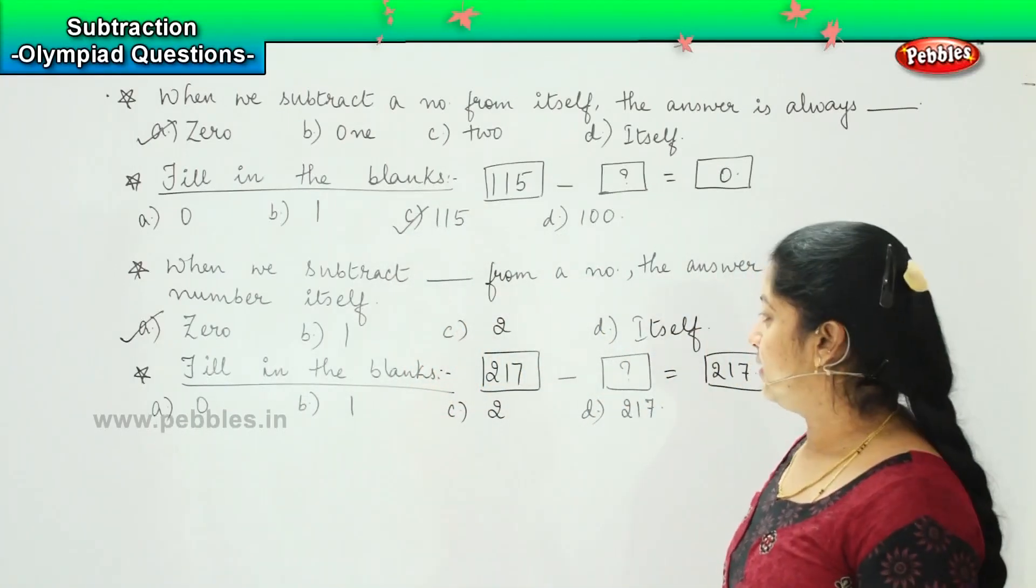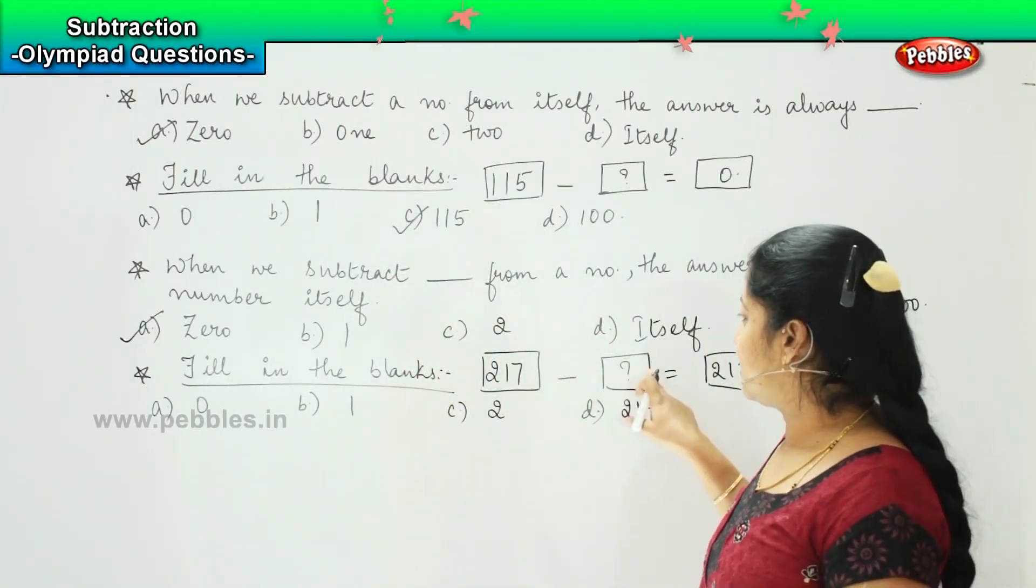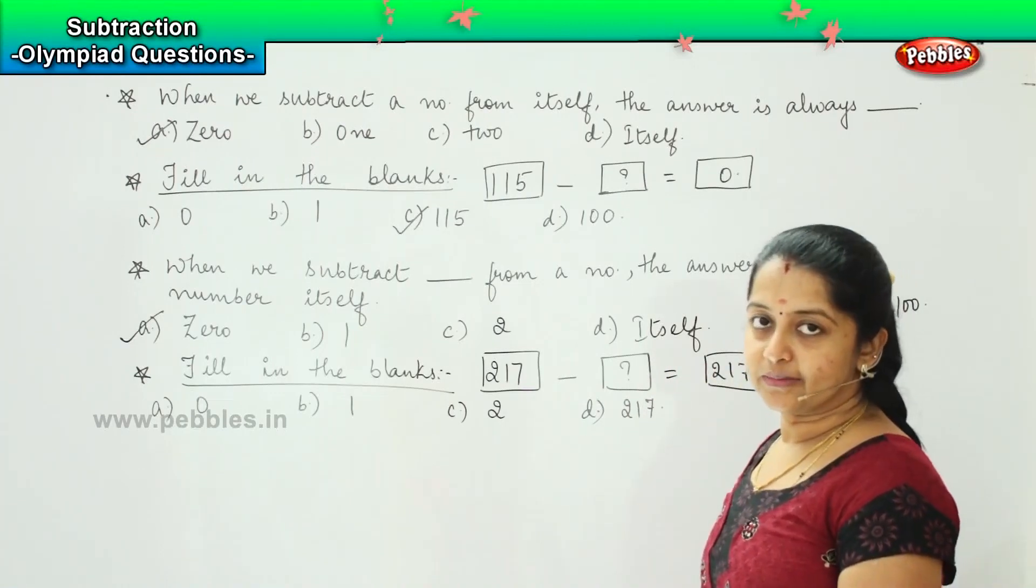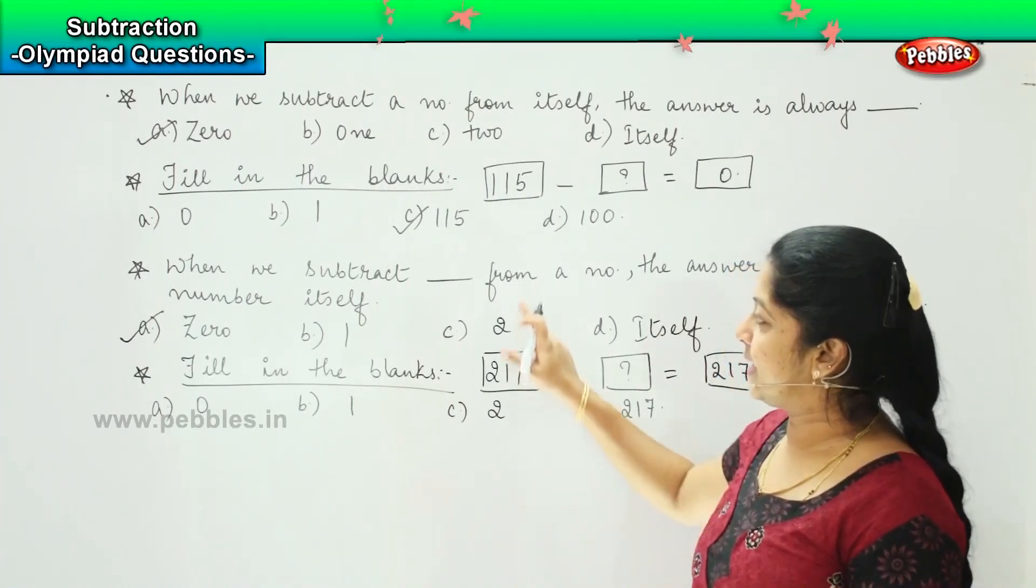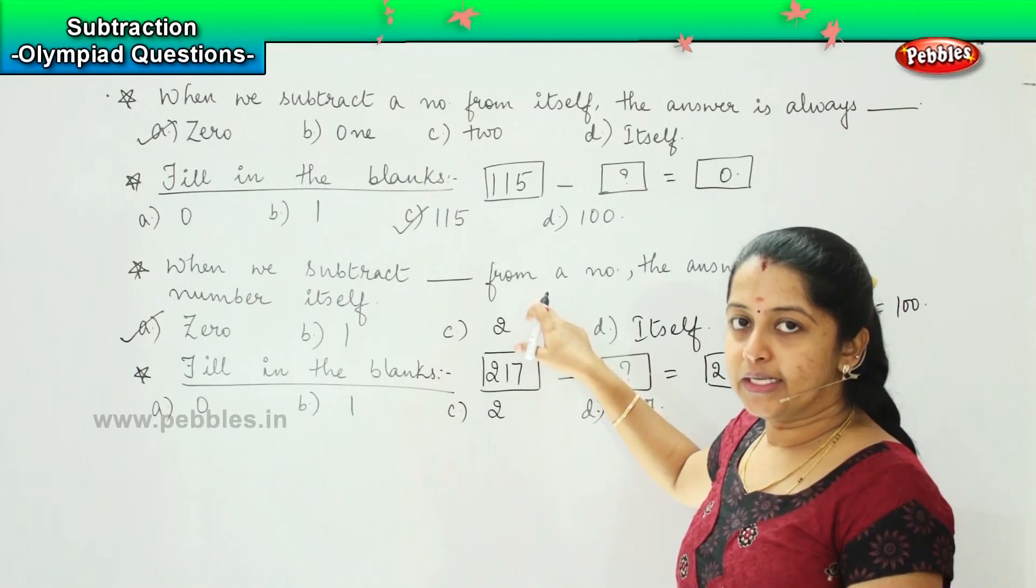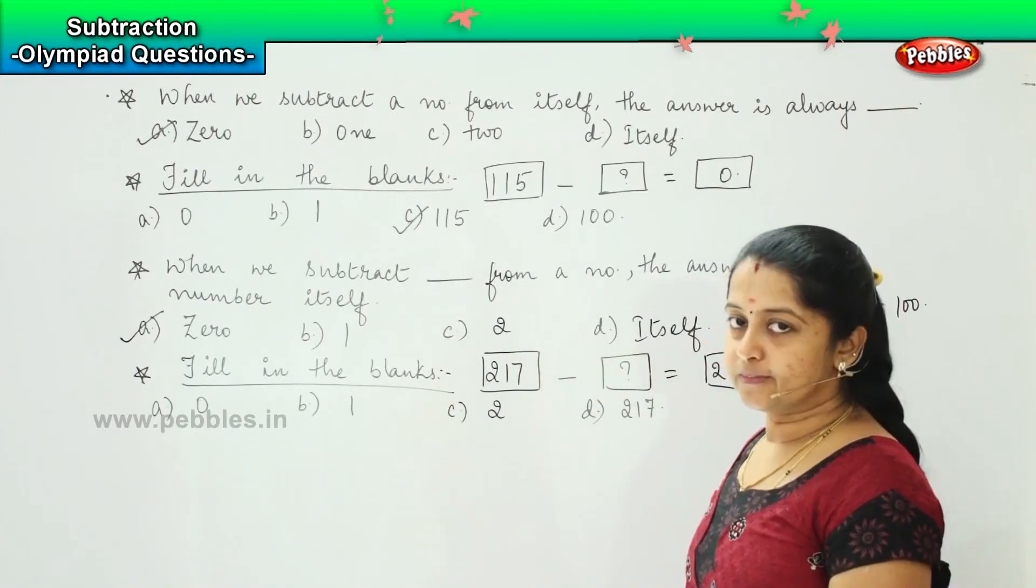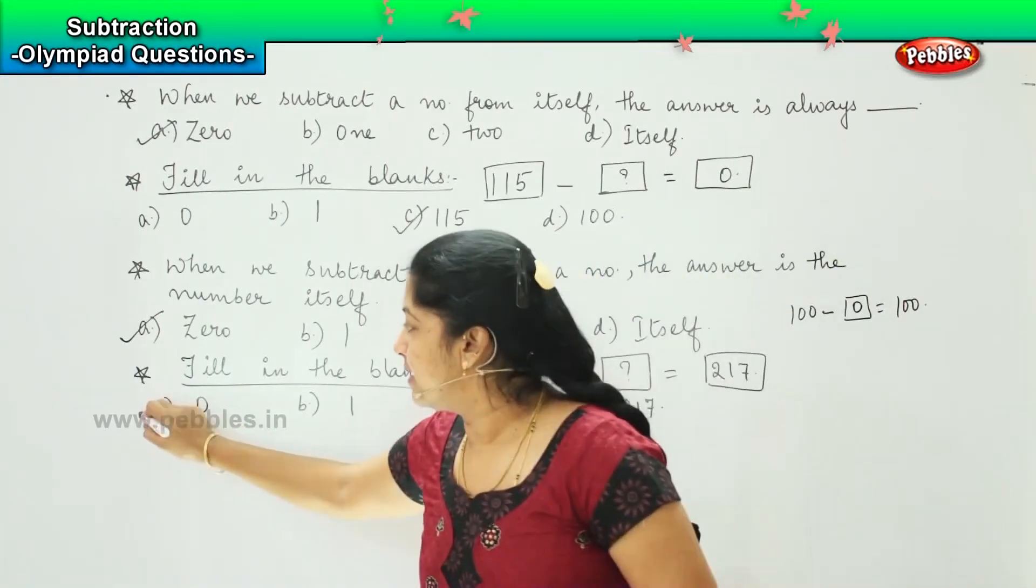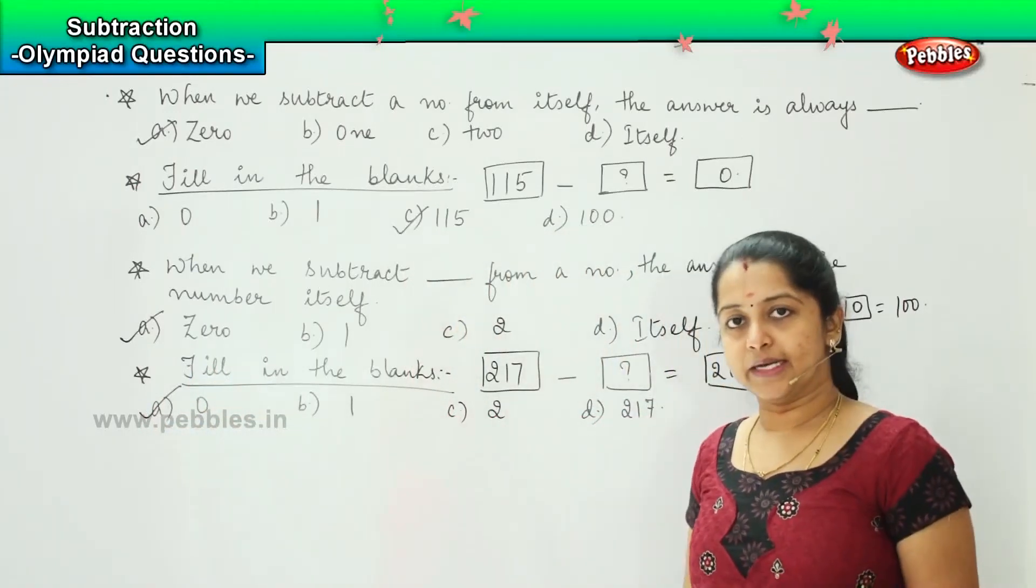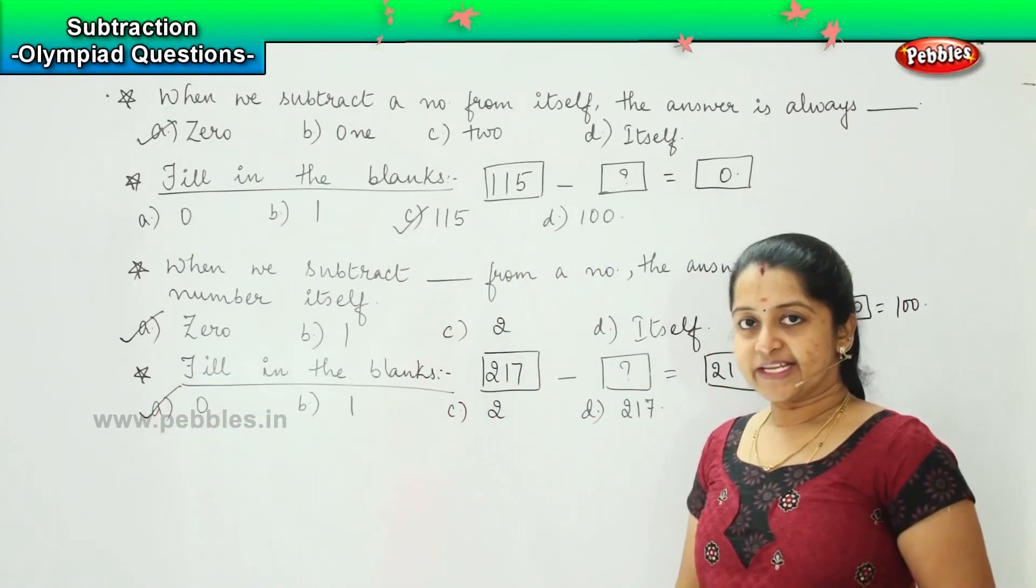So what is the right answer here? 217 minus something equals 217. So this is exactly the principle which we did earlier. So the answer is yes, it is a, zero. Clear? Shall we move to the next one?